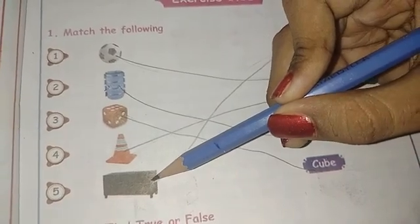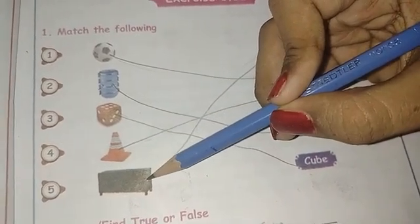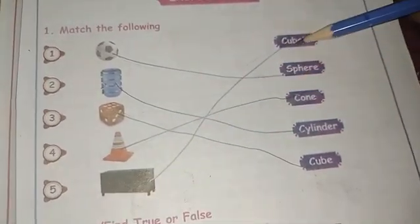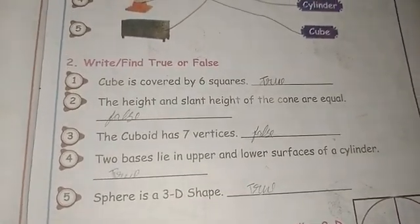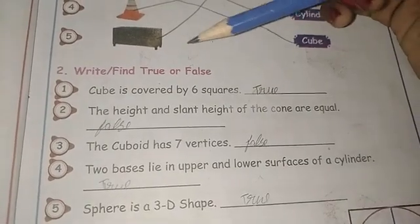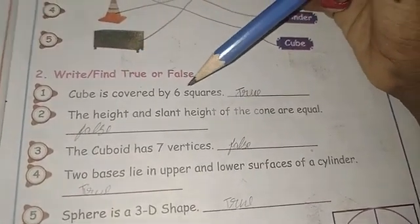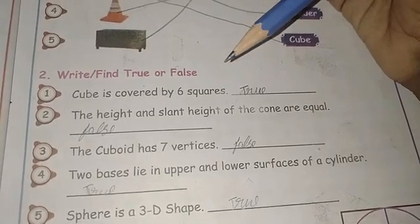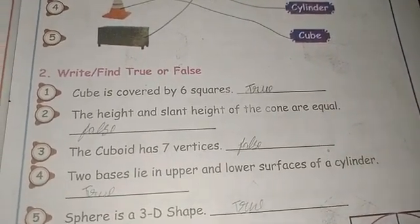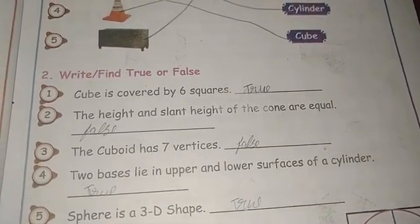Next is the bench or a table. Where does it go? Yeah, it goes to a cuboid. Next, write/find true or false. Okay, a cube is covered by six squares. It's true or false? Yeah, true, because cube has six faces, so six squares is true.